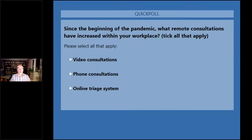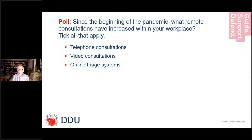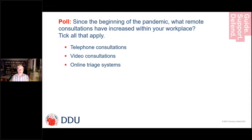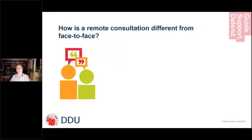Since the beginning of the pandemic, telephone consultations have increased enormously within workplaces. Online has not increased much, and video a bit more than online triaging systems. That's not a surprise — telephone triage boomed during the first lockdown and it's probably here to stay. Video consultations would be similar to telephone ones, while chat systems are a bit more difficult for consultations.